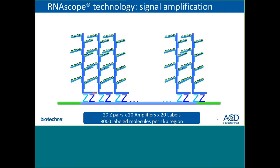The amplifier molecules bind to multiple binding sites along the preamplifier molecules. Finally, labeled probes containing fluorescent molecules or chromogenic enzymes bind to the numerous binding sites on each amplifier. The result of this amplification strategy is a Christmas tree of sorts, with about 400-fold amplification per set of double Z probes. Since each probe set consists of a pool of about 20 double Z pairs, each with 20 amplifier molecules which each bind to 20 labels, this means that for a roughly one-kilobase target region, the amplification strategy employed by RNAscope can recruit up to about 8,000 labeled molecules.